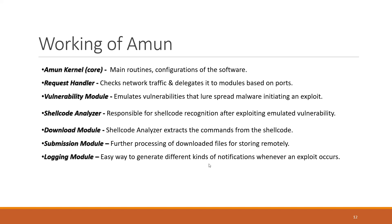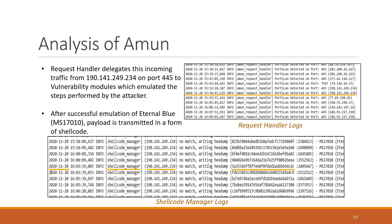The submission module further processes downloaded files for remote storage. The logging module generates different kinds of notifications whenever an error or exploit occurs. I only found one event traced from start to end. The IP 191.141.249.234 tried to scan port 445. As soon as the vulnerability module received the request, the attacker tried to exploit it by transferring a payload in the form of a shellcode — the vulnerability exploited was EternalBlue.